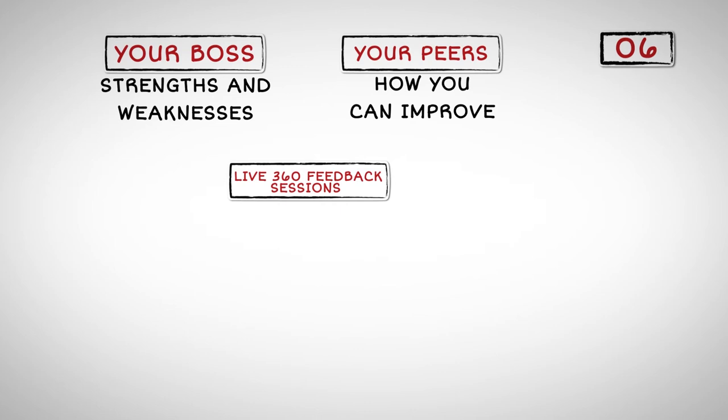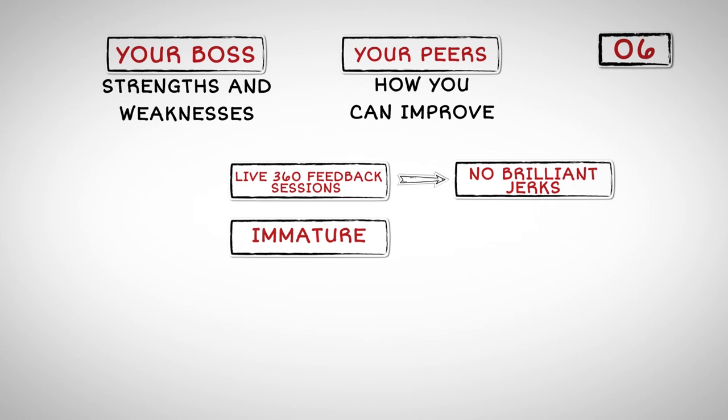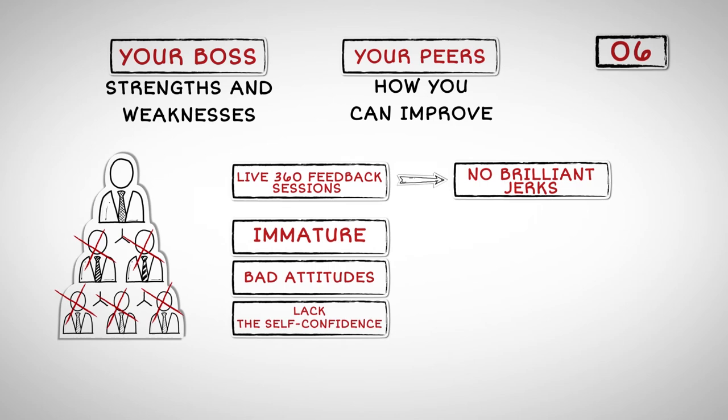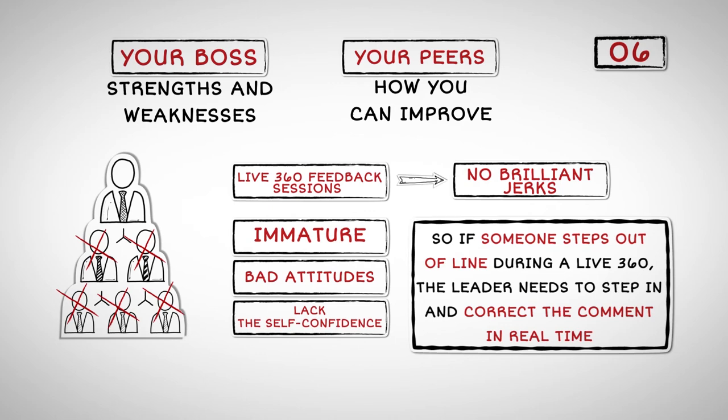Live 360 feedback sessions work when you have high talent density and a no brilliant jerks policy. If your employees are immature, have bad attitudes, or lack the self-confidence to show public vulnerability, they have no place on your team. You want to be very careful not to shame anyone. So if someone steps out of line during a live 360, the leader needs to step in and correct the comment in real time.